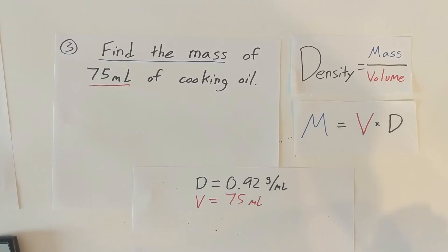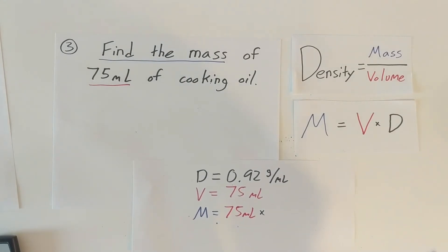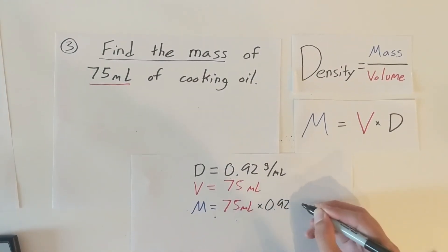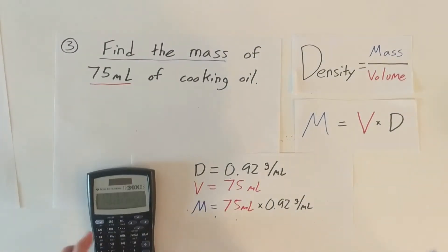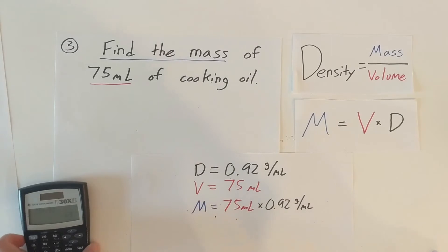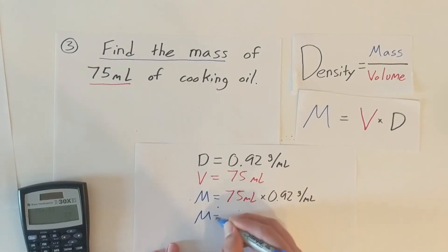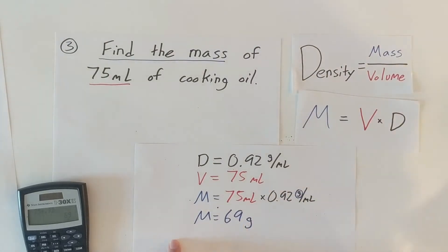Mass equals volume times density, so mass equals 75 milliliters times 0.92 grams per milliliter. Plug that into your calculator: 75 times 0.92 gives you 69. Mass equals 69 grams — units taken directly from our calculation.